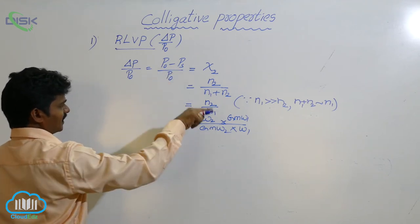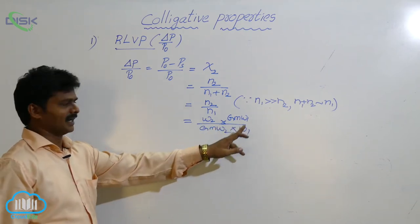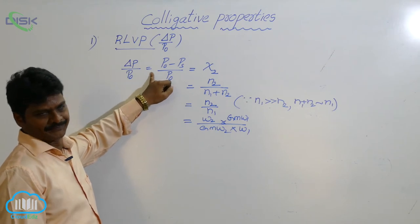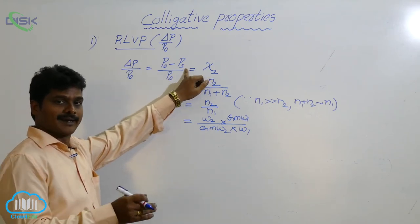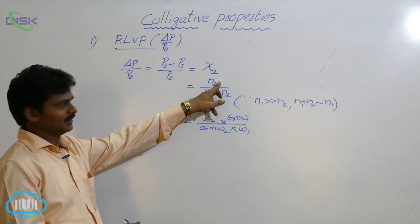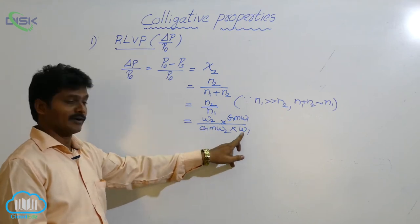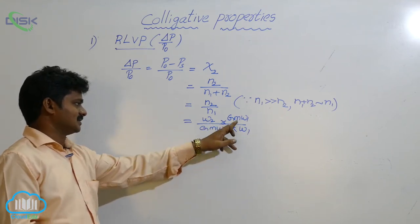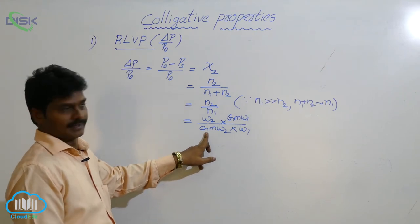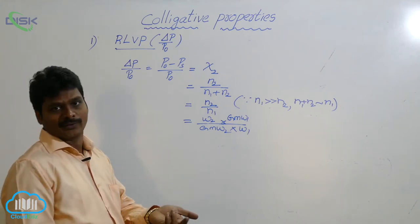The final formula is: (P₀ - Ps)/P₀ = (W₂/GMW₂) × (GMW₁/W₁), where P₀ is the vapor pressure of pure solvent, Ps is the vapor pressure of solution containing non-volatile solute, N₂ is moles of solute, N₁ is moles of solvent, W₂ and W₁ are weights of solute and solvent, and GMW₁ and GMW₂ are gram molecular weights of solvent and solute respectively. This formula is used when there is only one non-volatile solute.